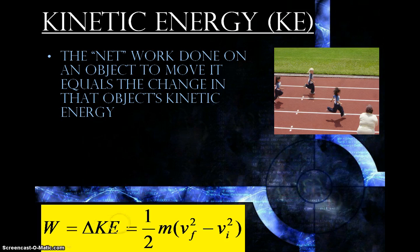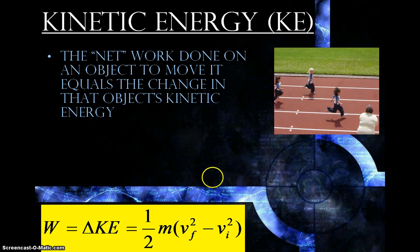So, we write it as one half the mass. Most often the mass is staying the same — it's not changing as the object moves, but what is changing is the velocity. So, you have v final squared minus v initial squared.